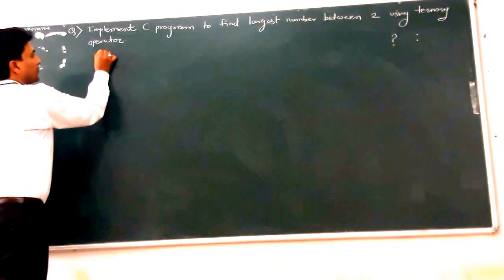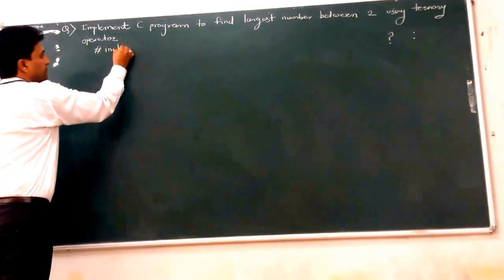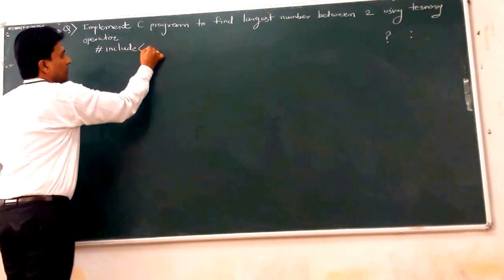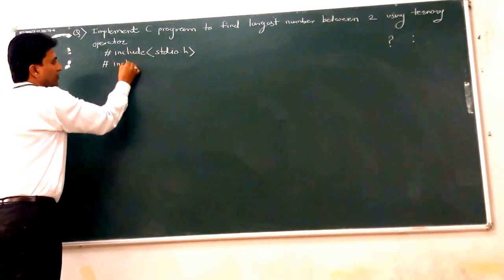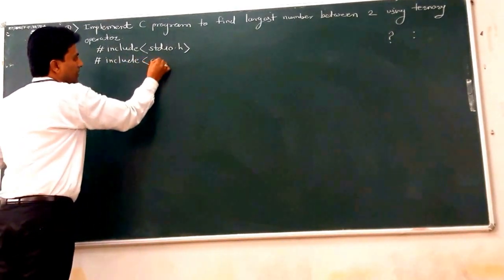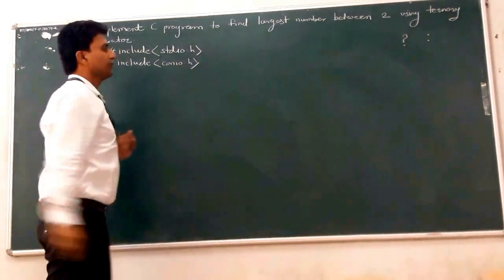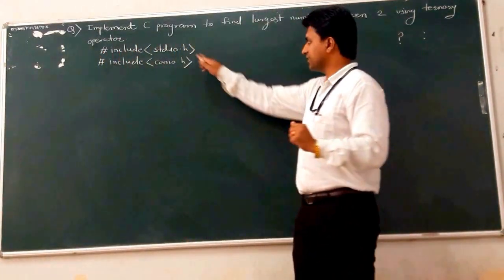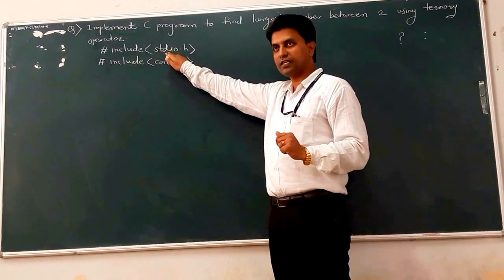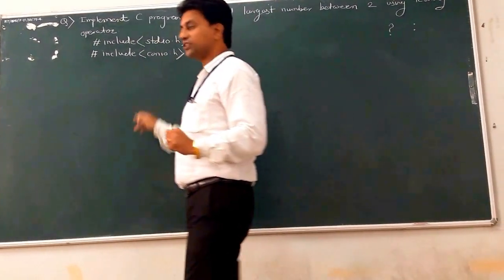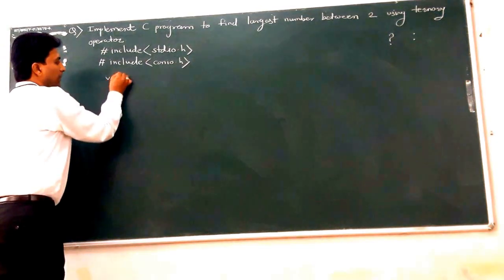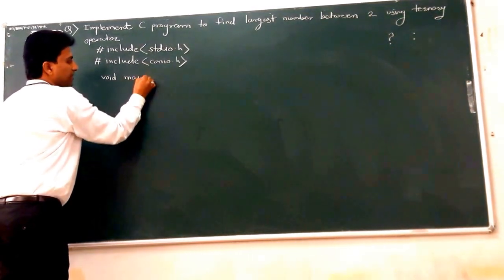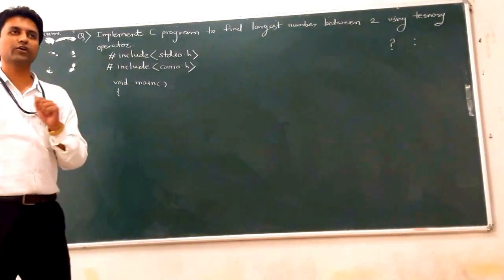First, start with including the header files. We include stdio.h as the first header file, and conio.h as the second header file. The printf and scanf function definitions are present in the stdio.h header file, while the getch and clrscr function definitions are present in conio.h. Next, the program starts from the main function — write void main with the curly bracket body.